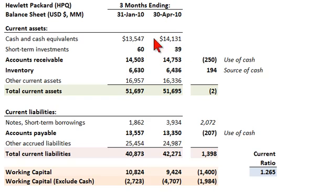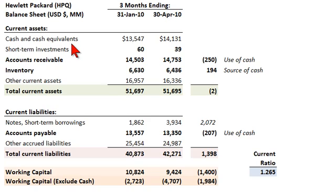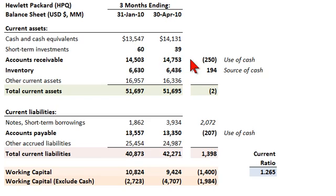For current assets, we have cash and cash equivalents, most recently about $14.1 billion — the units here are in millions. Then short-term investments, which analytically we might lump into the same account. These are ordered generally in terms of greater liquidity at the top, so the most liquid instrument is cash. Then the next key current asset account is accounts receivable — about $14.7 to $14.8 billion — where Hewlett-Packard has sold products to customers on credit terms.